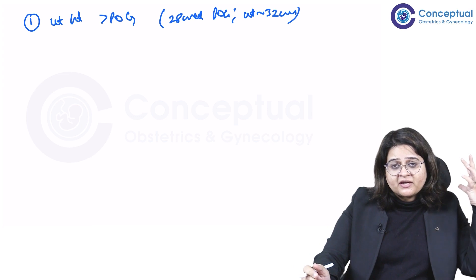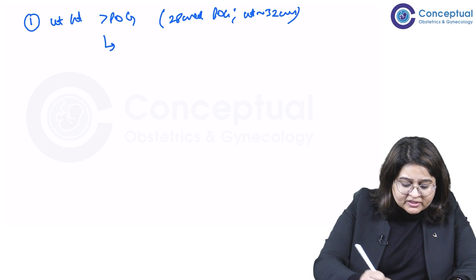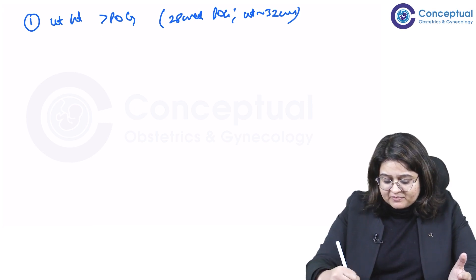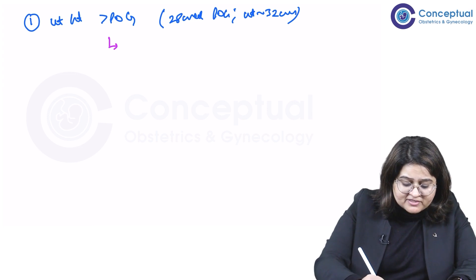So what are the things I'm going to think of? What are my differential diagnoses based on this clinical examination? I now need to start thinking of causes that may increase the uterine height more than the POG.